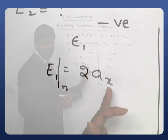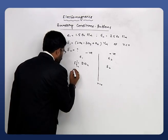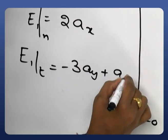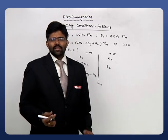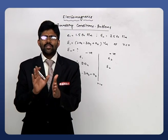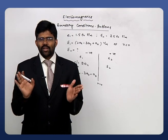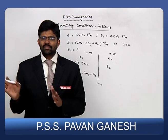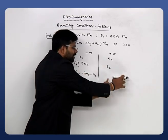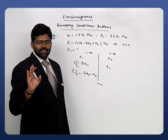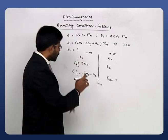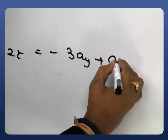E₁n = 2ax is the normal component. The remaining components are tangential, so E₁t = -3ay + az. Now applying the boundary conditions for the electric field: the tangential component is always continuous — there is no change in the tangential component. So the tangential component in the second medium E₂t is the same as E₁t, which equals -3ay + az. No need to change it.